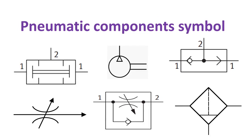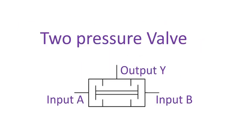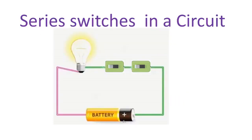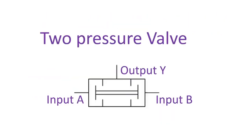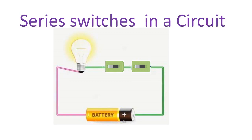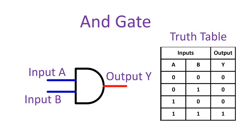Now let's proceed to pneumatic component symbols. The two-pressure valve works on the same principle as a series circuit and AND gate. The output of the two-pressure valve is true or high if both pressure inputs A and B are true, otherwise it's false. In the equivalent series circuit, the bulb will only glow if both switches are on. For the AND gate, it behaves according to the truth table — the output is 1 if both inputs A and B are 1, otherwise it's 0.